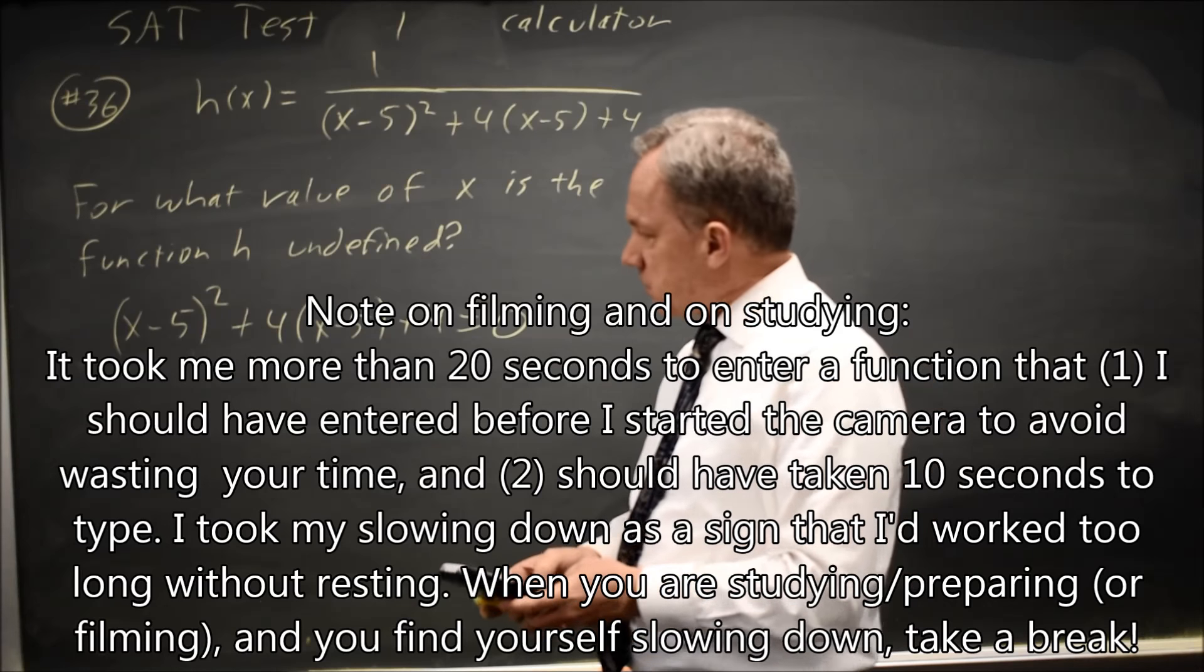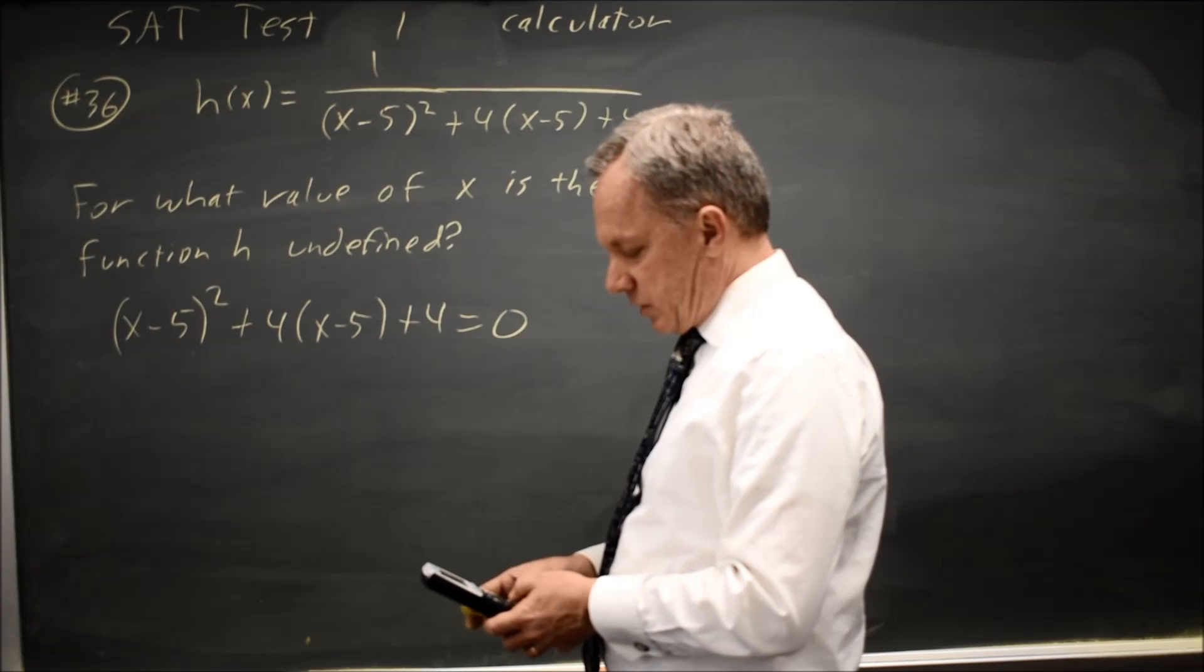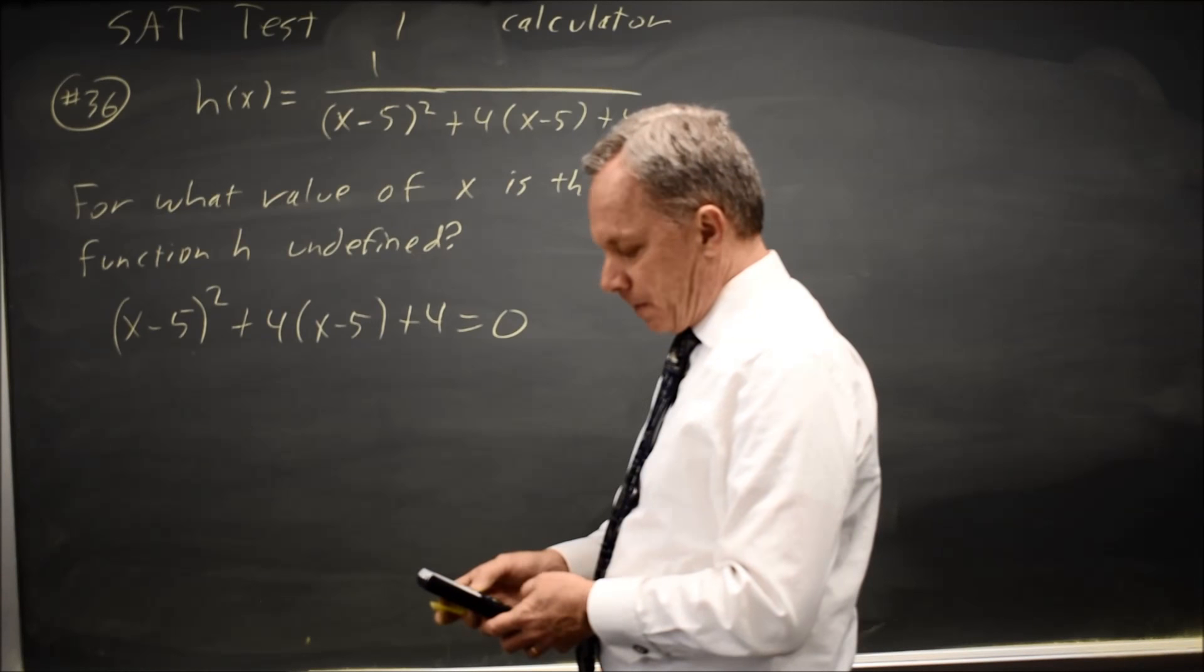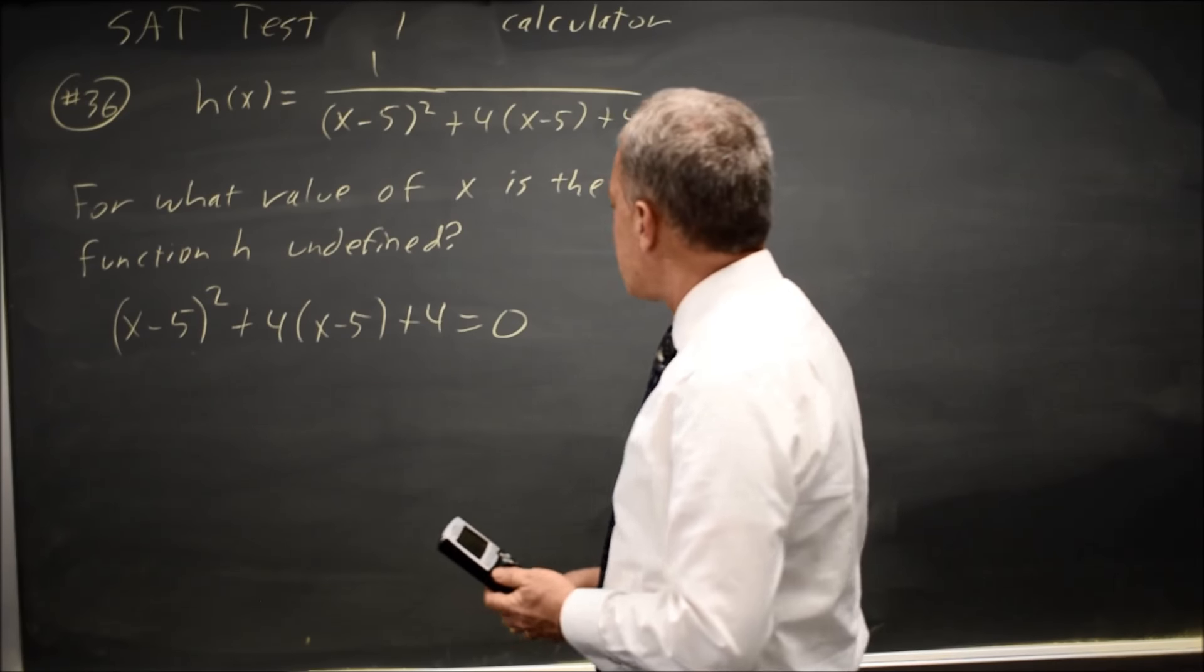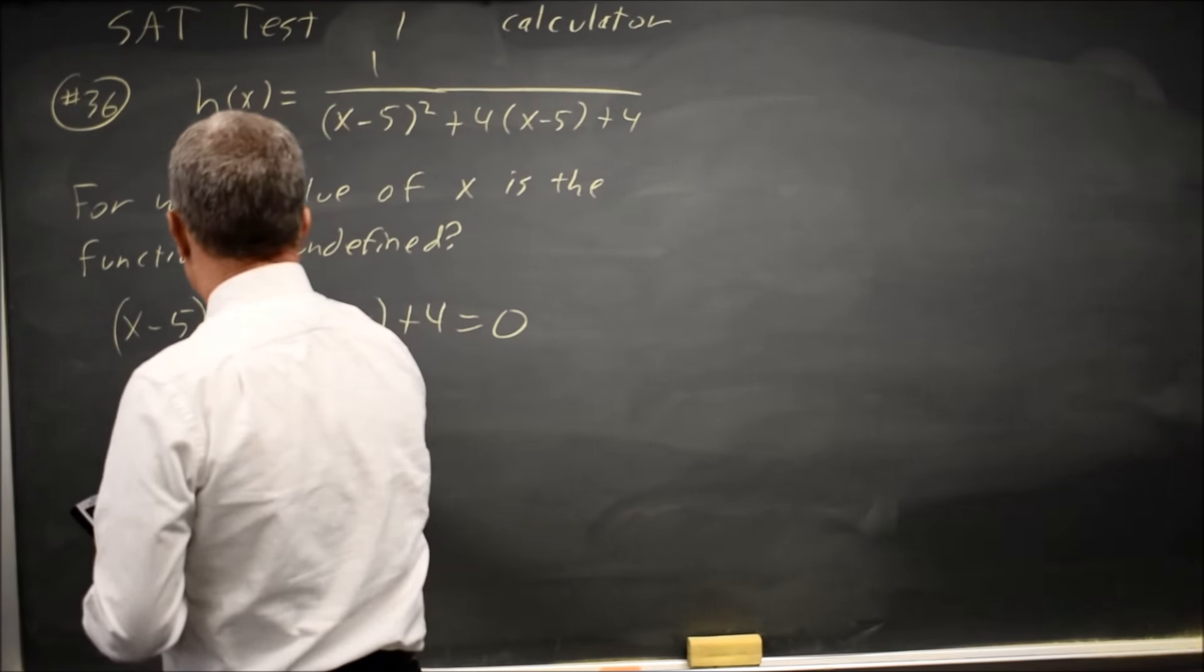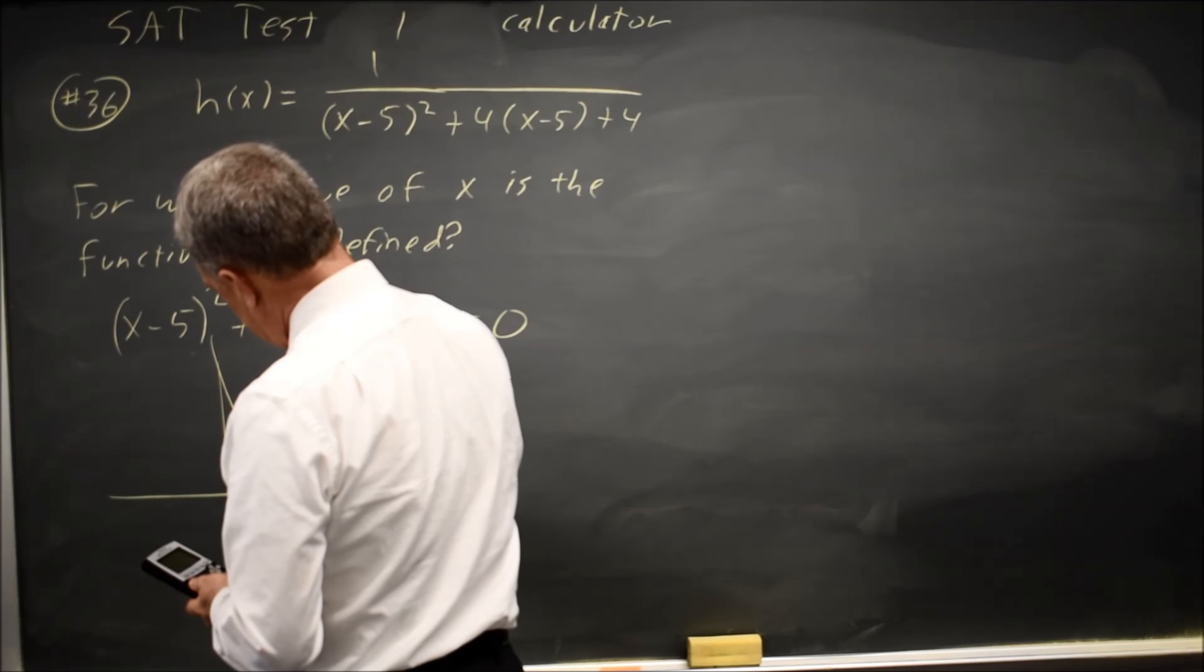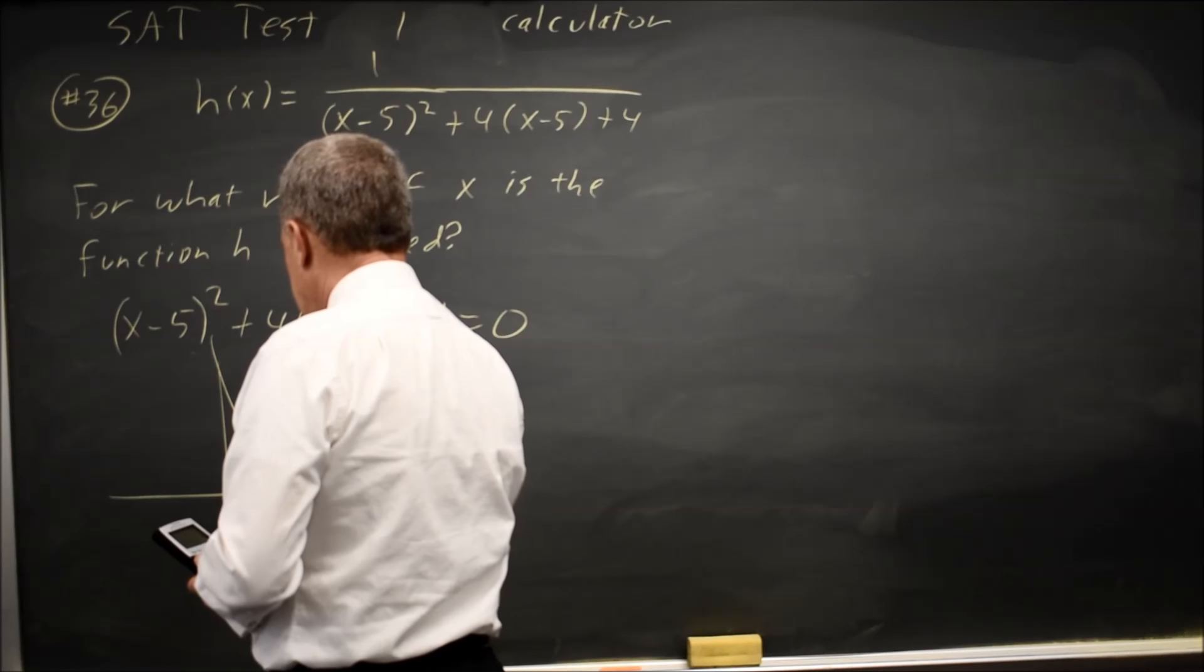And that is (x - 5)² + 4(x - 5) + 4. I graph it, and the graph looks like this, touching the x-axis at x equals 3.